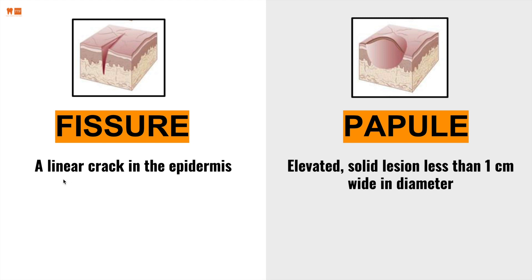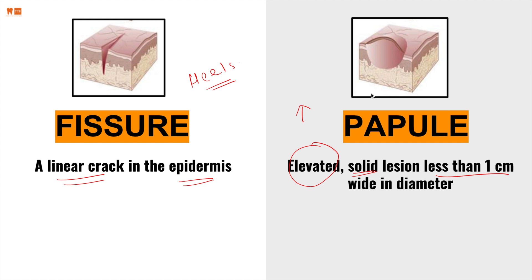Fissure is a linear crack. We can see these generally at the heels of our feet when they're extremely dry — you can see a vertical crack in the epidermis. Papule, on the other hand, gets us into vertical lesions. There is an elevated, solid lesion that is less than one centimeter in diameter. Solid because there are some fluid-filled lesions — this one is a solid.